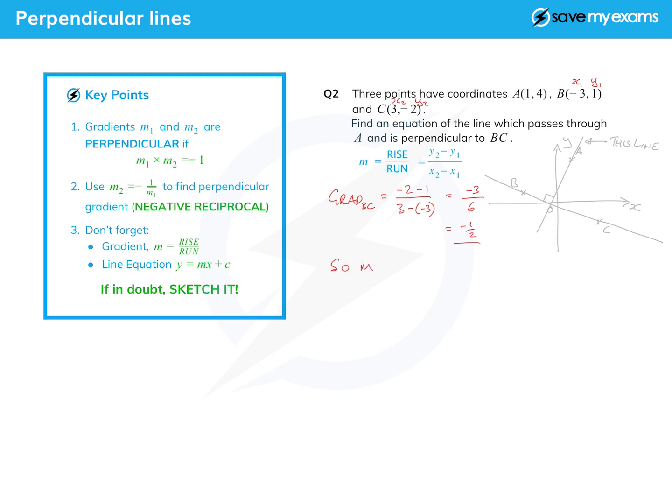So the m we want, the gradient we want, is of course 2. How have I done that so quickly? Well I've just remembered that the two things must multiply together to give minus 1 if they are perpendicular. Since 2 times minus a half equals minus 1.